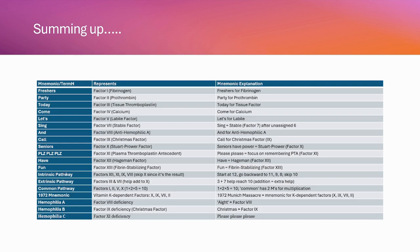Intrinsic pathway: omit factor 10 (seniors), include factors 12, 11, 9, and 8. Extrinsic pathway: need external help, add to reach 10 — factor 3 plus factor 7. Common pathway: two M's in 'common' means multiply — 1 × 2 × 5 = 10, so factors 1, 2, 5, and 10.